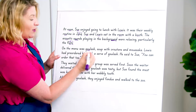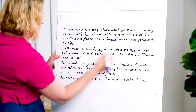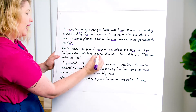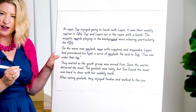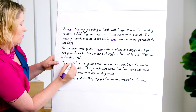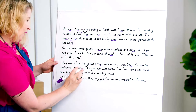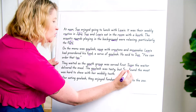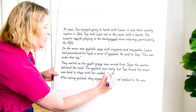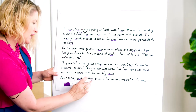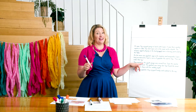On the menu was goulash. Soup with croutons and moussaka. Lewis had pre-ordered his food, a serve of goulash. He said to Sue, you can order that too. They waited as the youth group was served first. Soon the waiter delivered the meal. The goulash was tasty, but Sue found the meat was hard to chew with her wobbly tooth. After eating goulash, they enjoyed fondue and walked to the zoo. I didn't get tricked in that last paragraph — I finally worked it out!